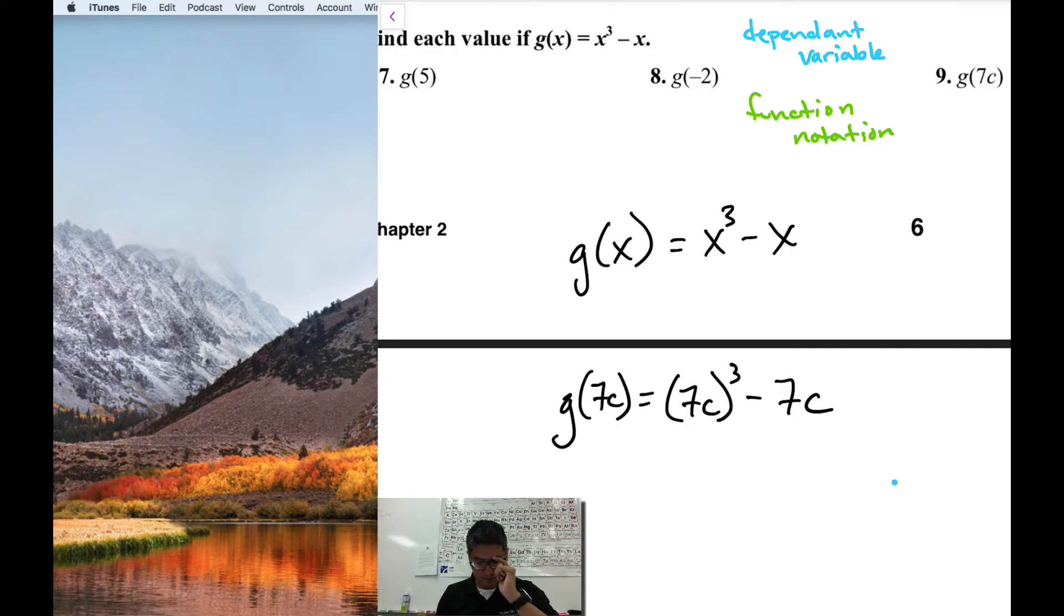That is 7c cubed minus 7c. This will be interesting. Let's see how this works out. If you guys remember your rules for exponents, you distribute that exponent to each term in here. So then my new equation is going to be 7 cubed.